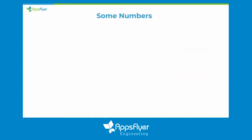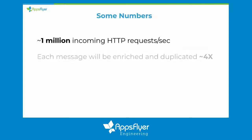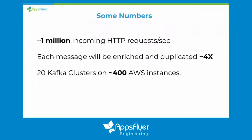AppFlyer is pretty successful, and that translates to a lot of requests. We process around one million incoming HTTP requests per second. Each message that comes to our servers gets enriched and duplicated around four times for Kafka, and we do all of that on plenty of clusters spanning around 400 AWS instances. Those numbers are a bit higher today — it comes up to around 70 billion requests a day.